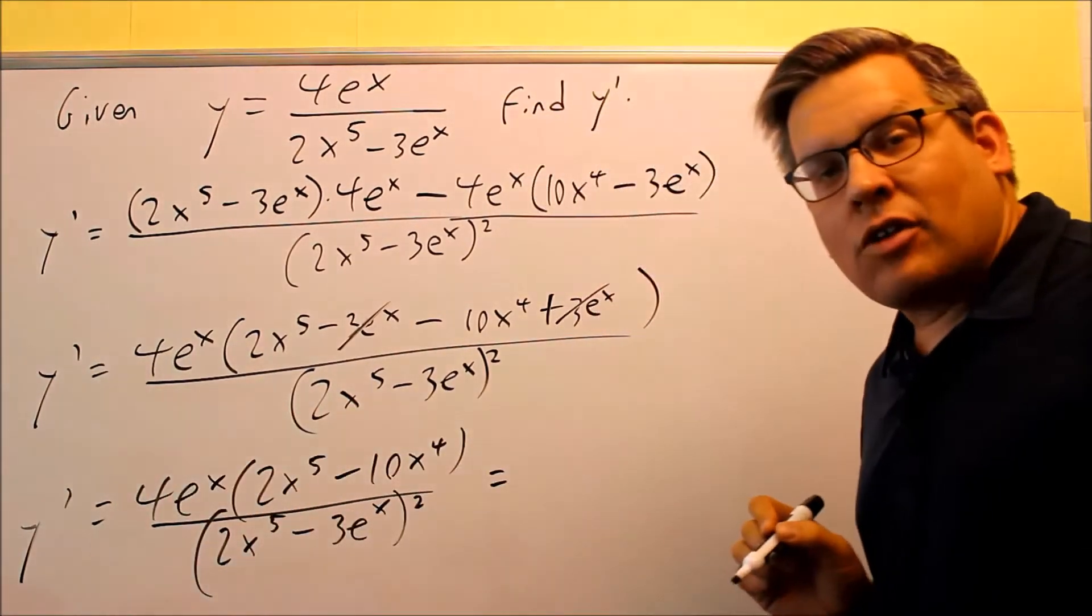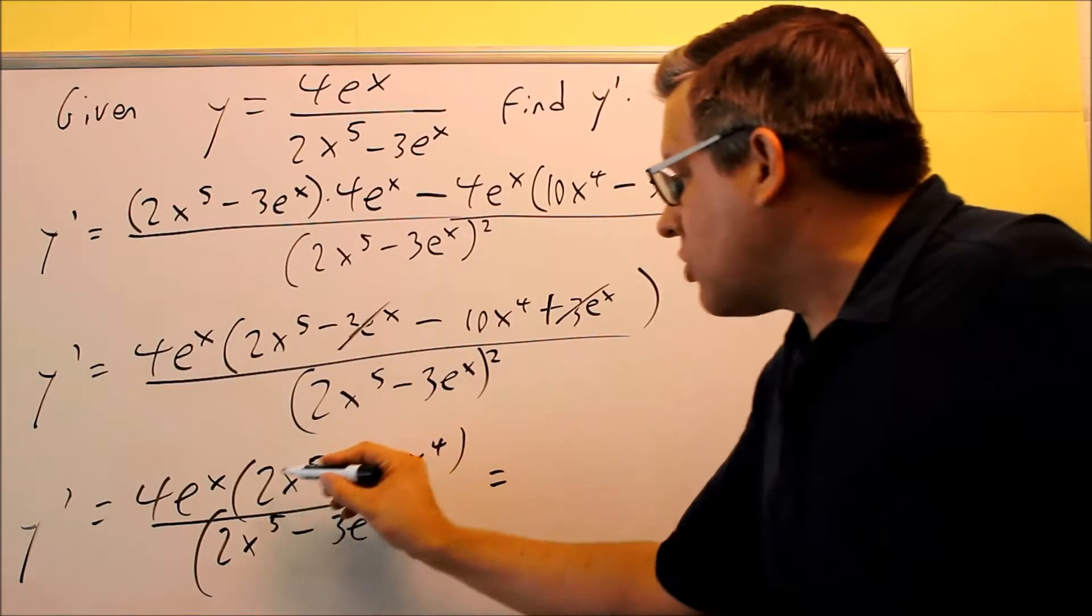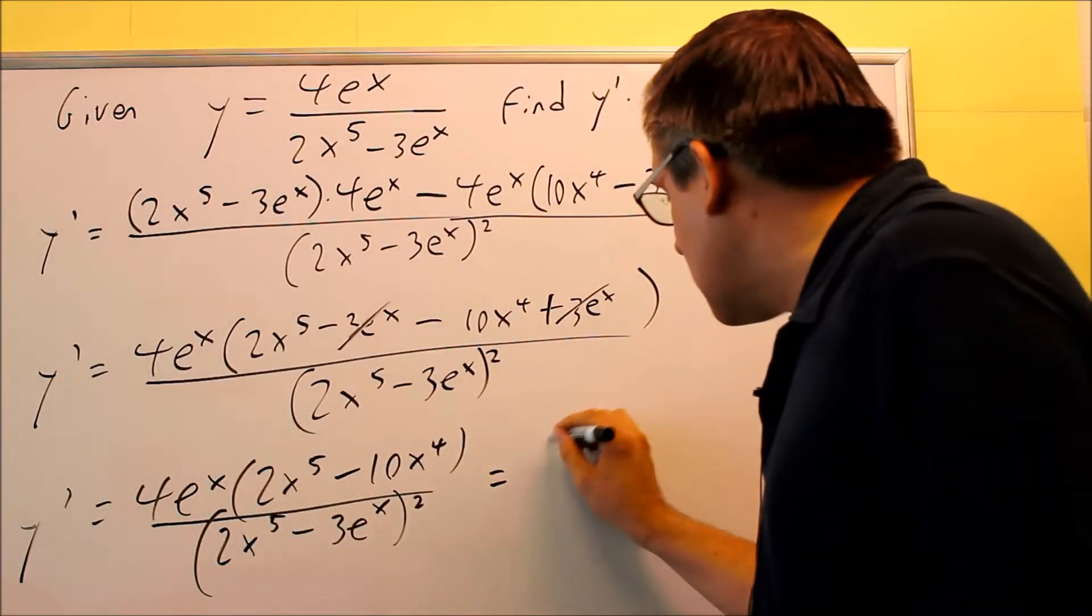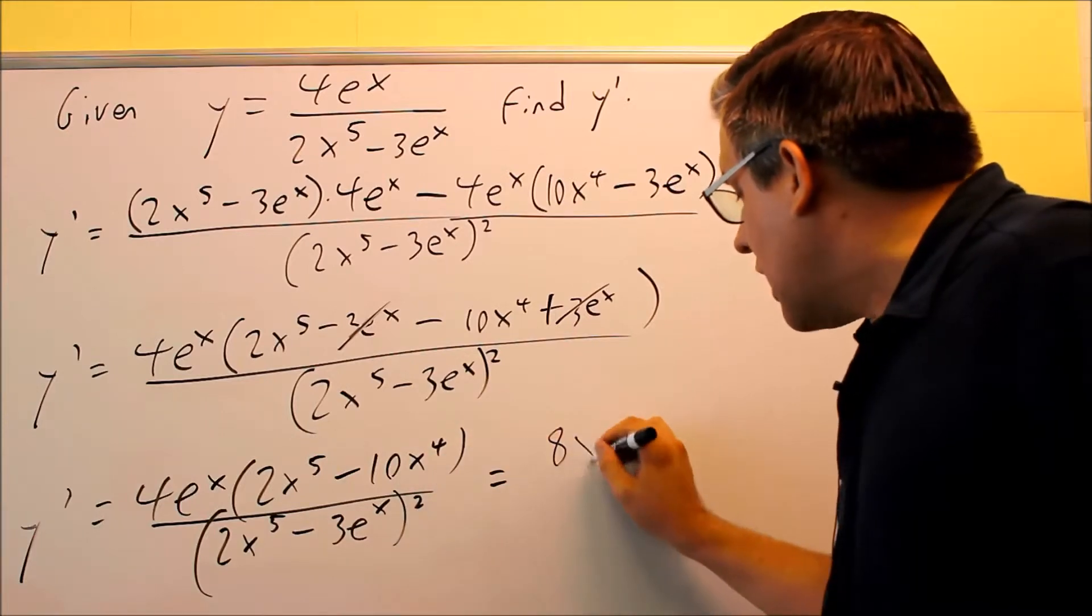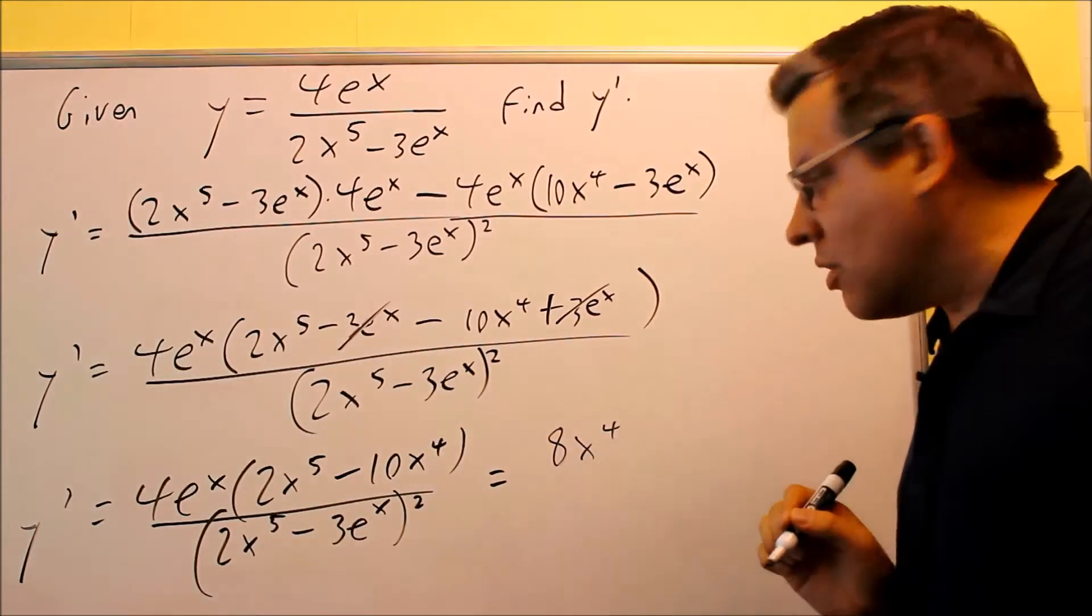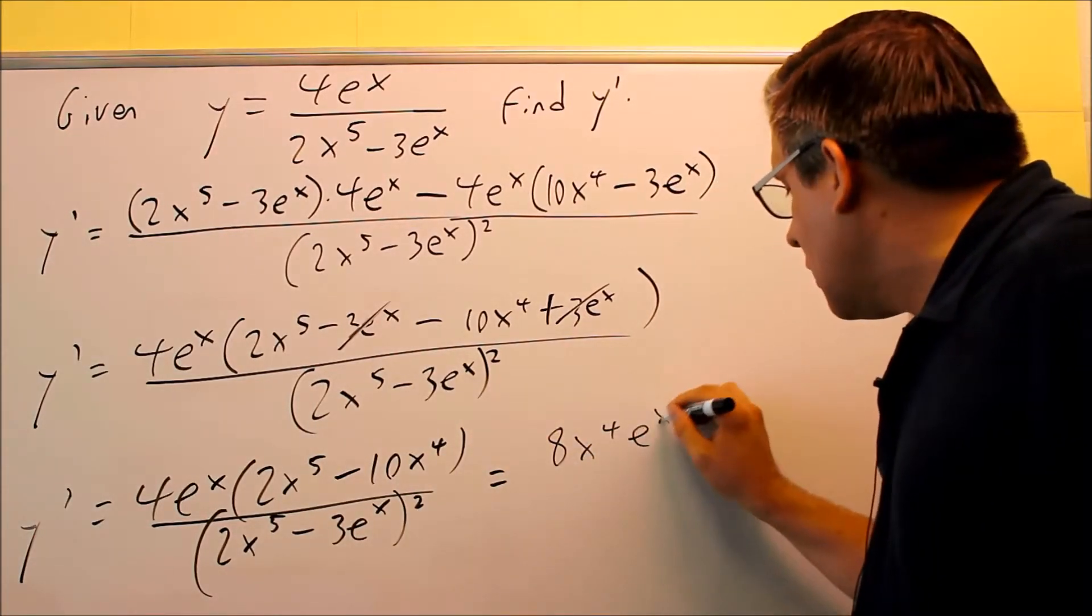it's going to end up being multiplied by what I have on the outside. So I'm pulling out a 2, I already have a 4 outside, that means that's going to turn into an 8. And then, I'm going to put an x to the 4th on the outside also, and then I still have the e to the x.